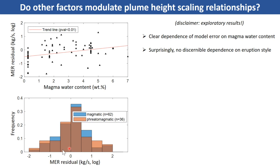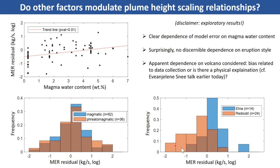Looking at the distribution of model error as a function of eruption style: in red is the histogram for all phreatomagmatic events in iVespa and in blue is the histogram for all magmatic events, and we systematically compiled eruption style when available. There is essentially no difference between the two distributions, meaning no discernible dependence of model error on eruption style. However, when examining which volcano the data comes from — with red being Montserrat with 24 events and blue being Etna with 14 events — there is a clear difference between the two distributions. This means either there is a bias related to data collection for different volcanoes, or there is a physical explanation, possibly relating to the coupling of plume dynamics to the lava fountain, as discussed earlier today.